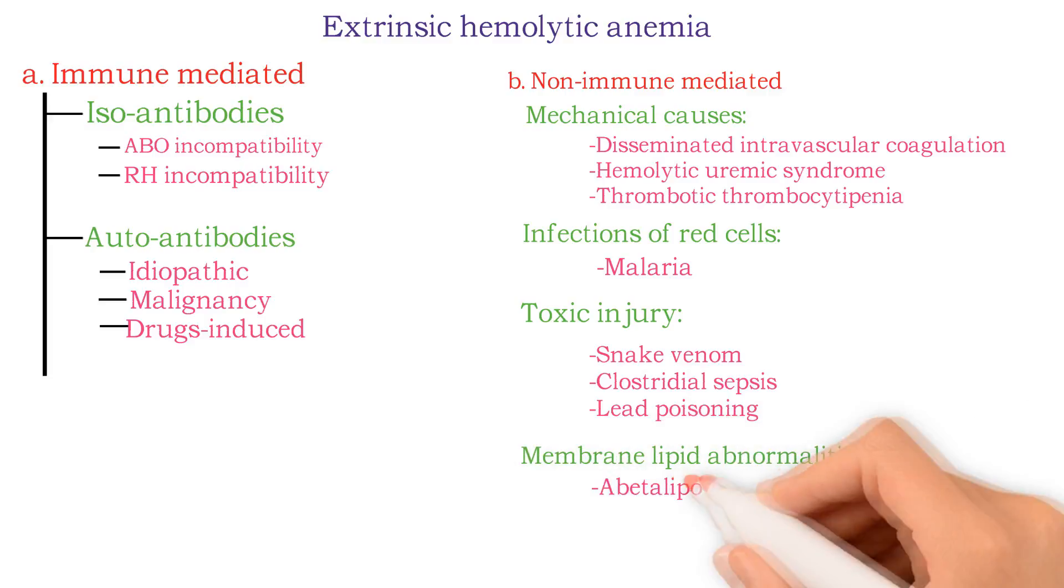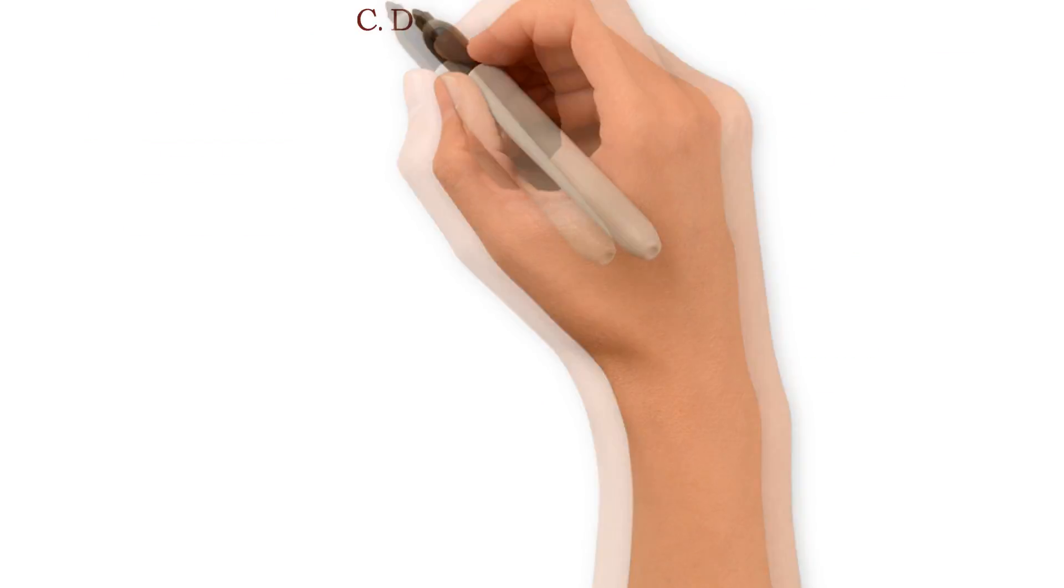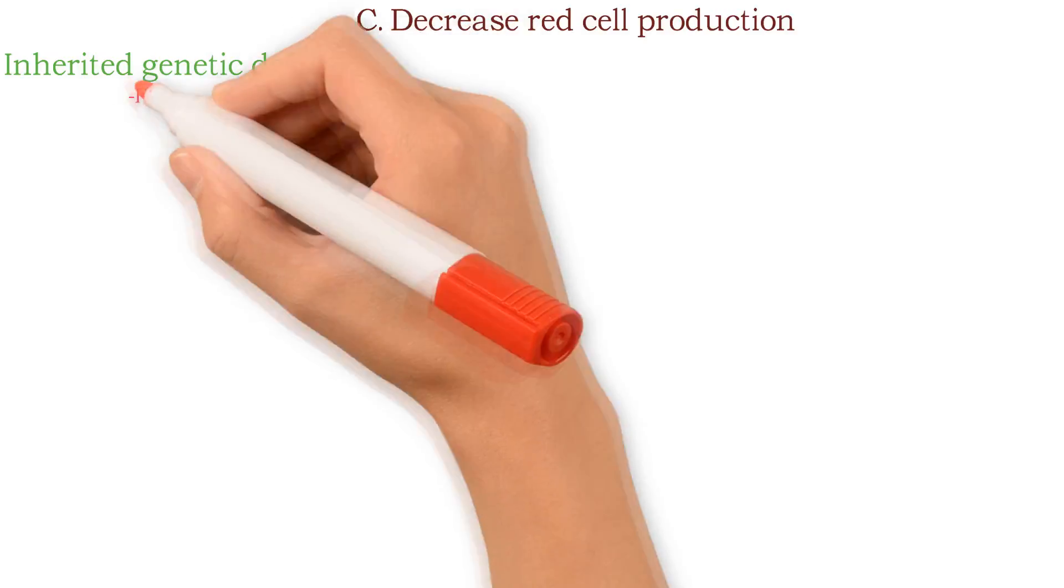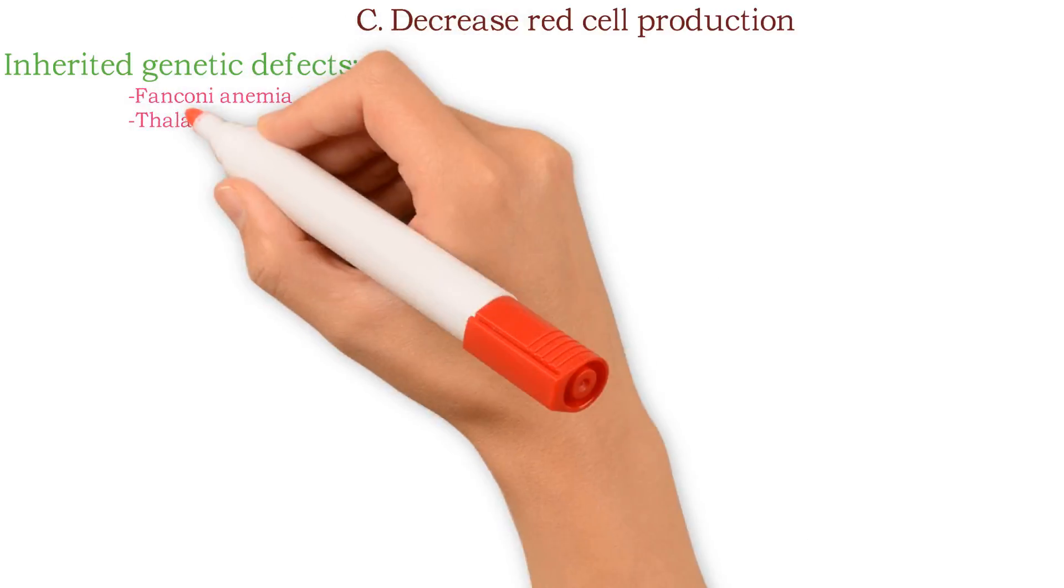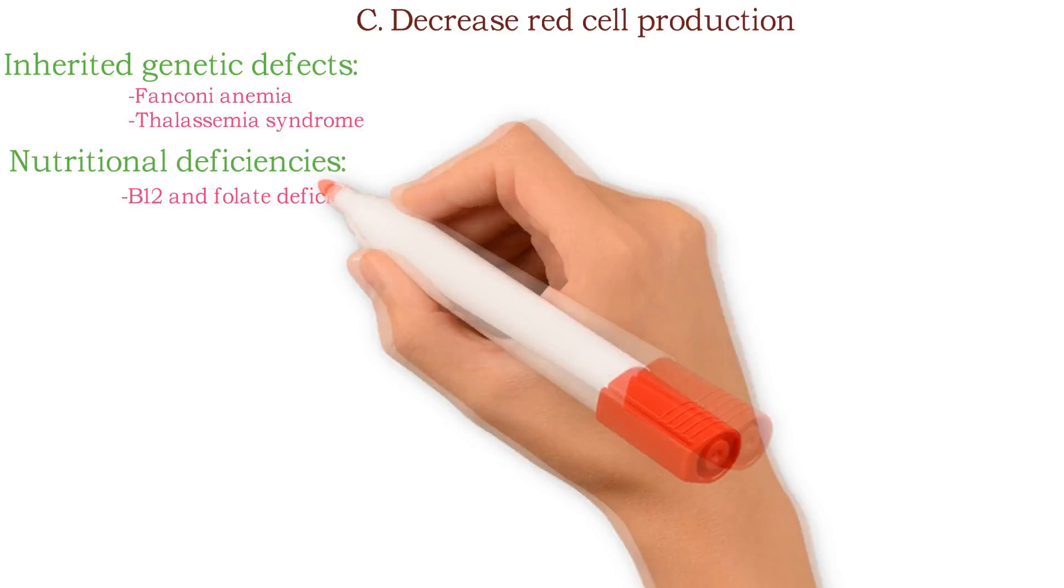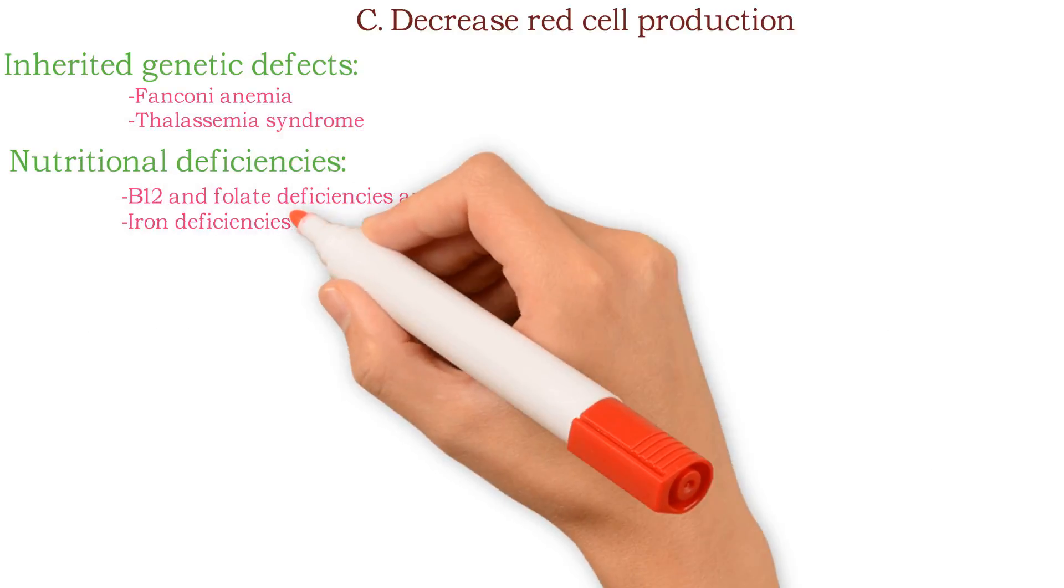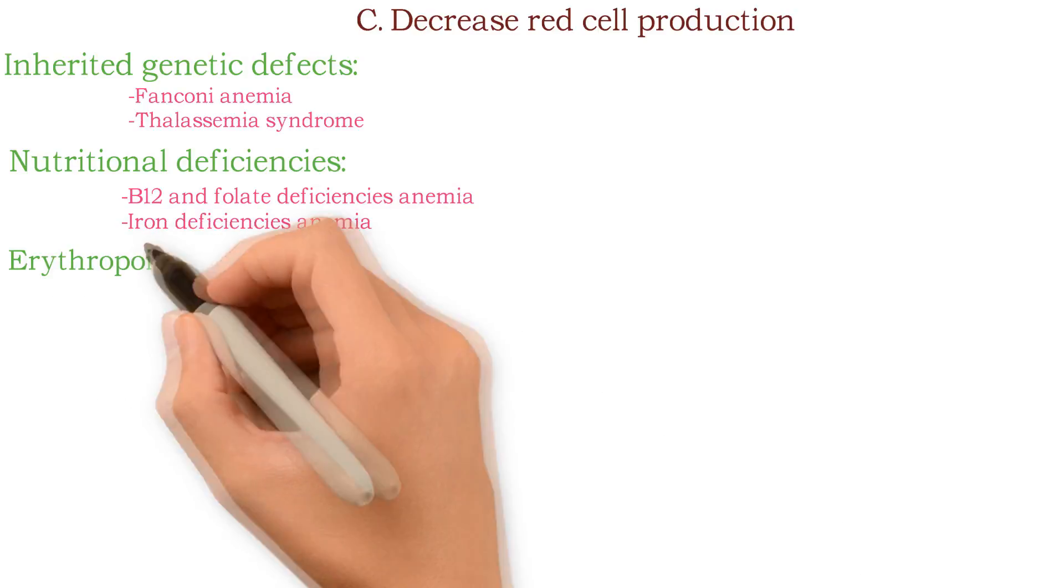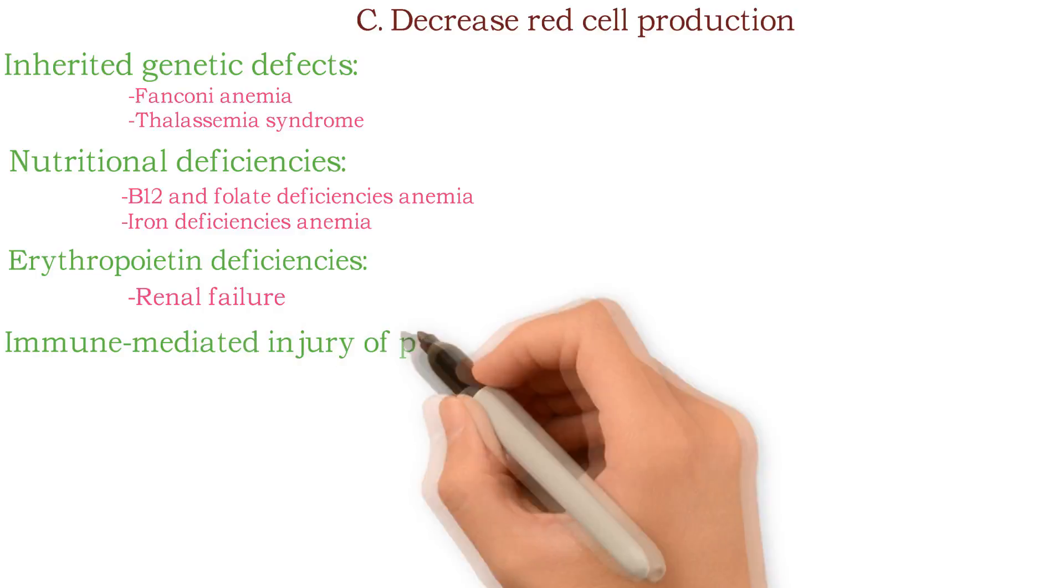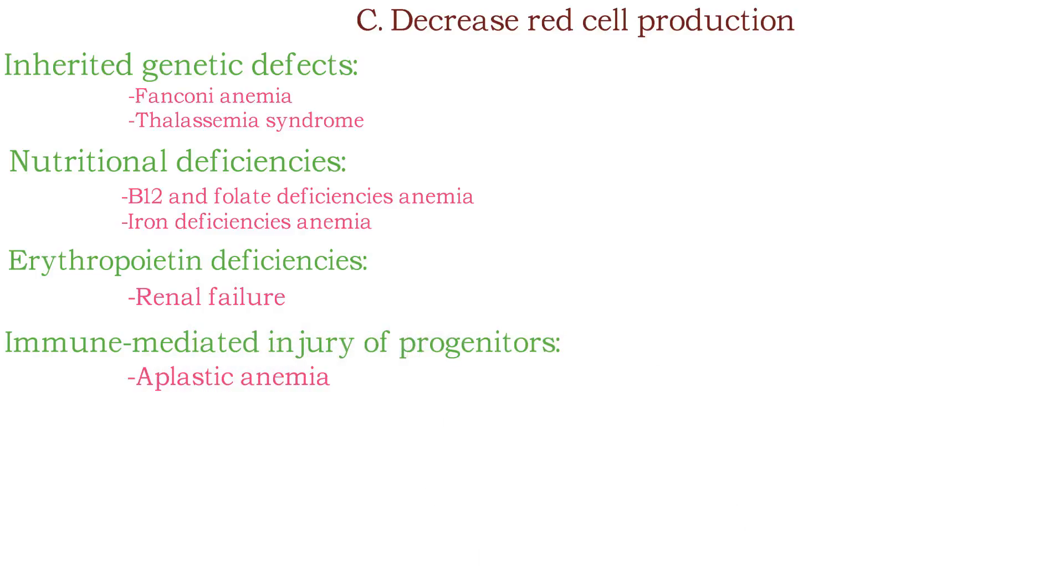Decreased red cell production: inherited genetic defects like Fanconi anemia and thalassemia syndrome, nutritional deficiencies such as B12 and folate deficiency anemia or iron deficiency anemia, erythropoietin deficiency in renal failure, immune mediated injury of progenitors like aplastic anemia.